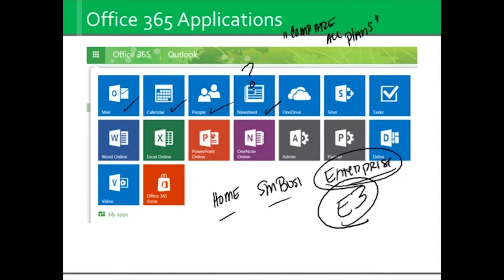What you're looking at here is what I'll call the Facebook of Office 365 where you're doing social engagements. OneDrive is technically your storage — it's online storage for all your documents — and within OneDrive you can actually create documents using your online applications. You'll find all your SharePoint sites here, and you'll find your task list here, which again, tasks are part of the Outlook suite.